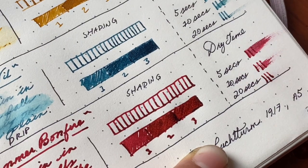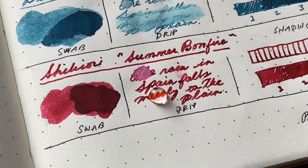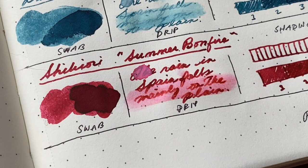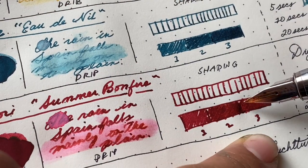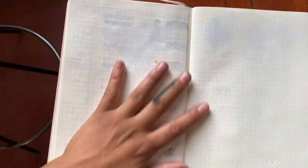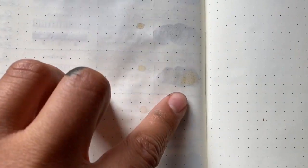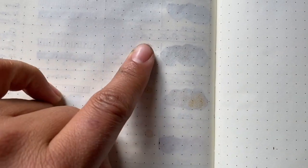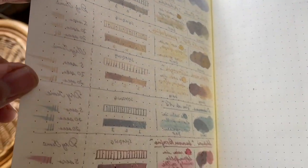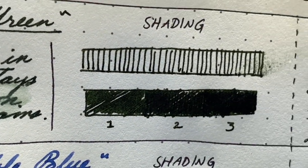The Sailor Shiki-ori ink actually stays quite well on the paper. Here we can see if there's any bleed through. There's some ghosting, obviously there's some bleed through where the ink was super condensed, but that makes sense. This is also perforated paper on the back, and that's why that bled through. But for the most part, I think this paper handles the inks really well.